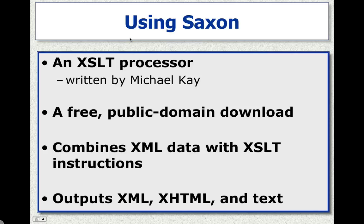Hi, my name is Peter Johnson and I'm going to show you how to use Saxon, which is an XSLT processor. Saxon was written by Michael Kay and he has put it up on SourceForge. It is now public domain open source software, and this is a tool that you can use to combine XML data with XSLT instructions to create either another XML in a different format, or you can create a web page as XHTML.